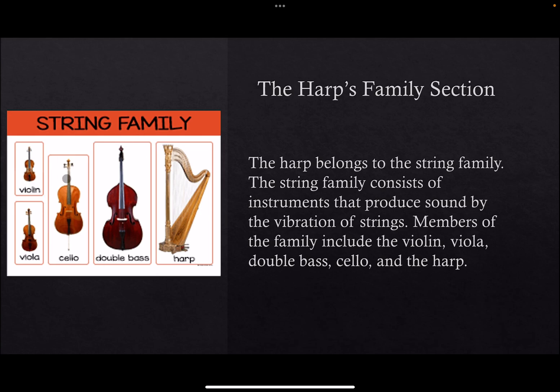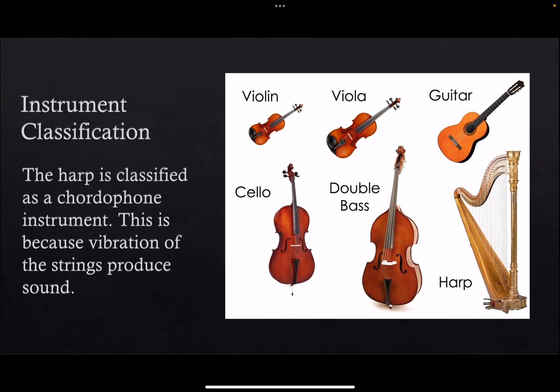This is a picture of the string family and the instruments that compose it. The instrument classification: the harp is classified as a chordophone instrument. This is because vibration of the strings produces sound. The harp is different from the rest of the chordophone instruments because it uses a musician's hands to produce music, instead of a bow or a pick.